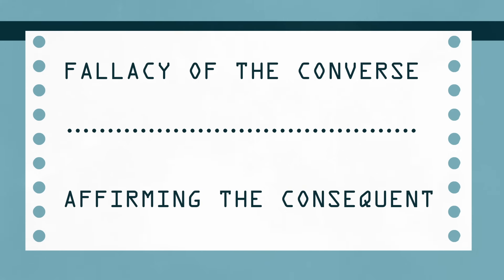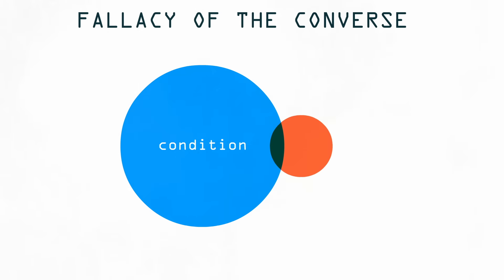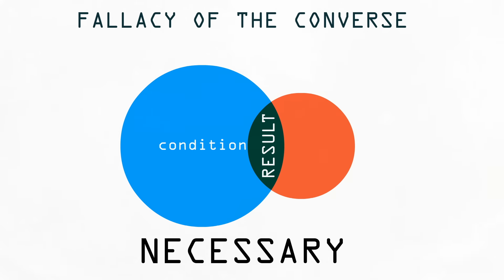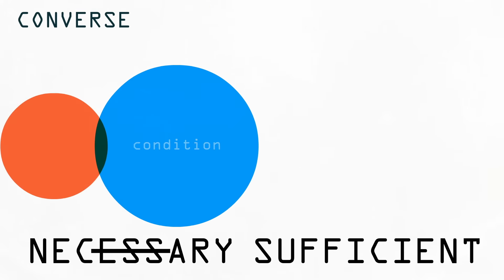The boxes are already being loaded onto the transport when you receive an urgent message. One of the four boxes was sealed incorrectly, but they lost track of which one.